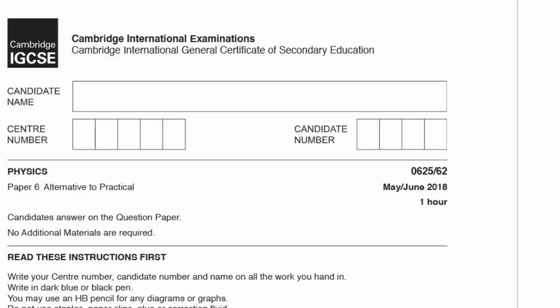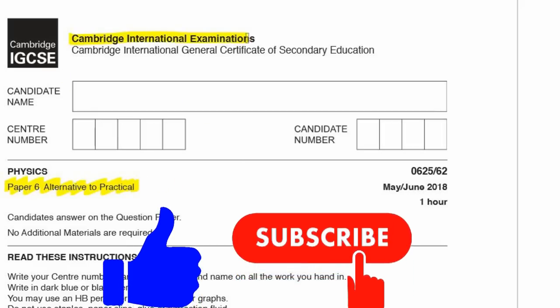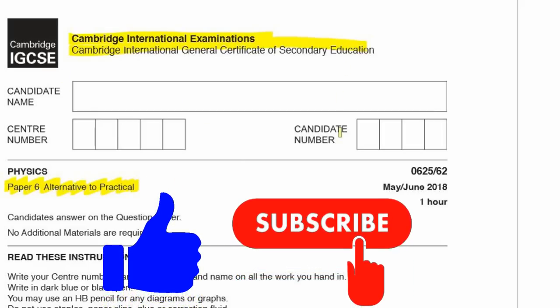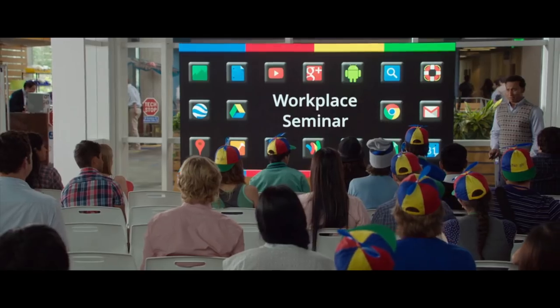Okay, today I'm going to cover the Physics Paper 6, the alternative to practical, and this is for the CIE IGCSE, and this is for May-June 2018, and the paper code here 0625-62, so this is the second variant. Alright, let's give it a go. Let's begin!